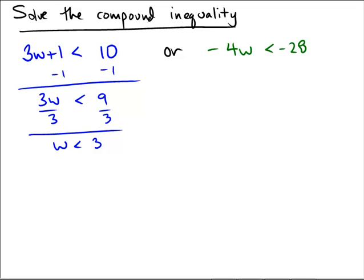On the other hand, on the right we have negative 4w less than negative 28. So I'll divide by negative 4. And that's going to yield w bigger than, because I've got to switch the inequality, bigger than 7. And the connector word is OR.